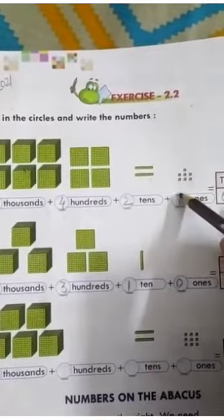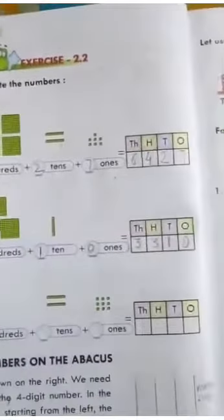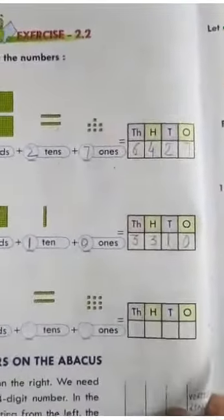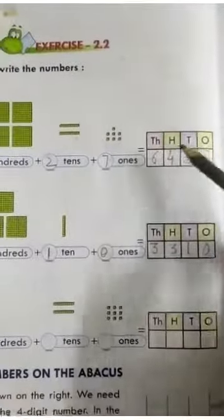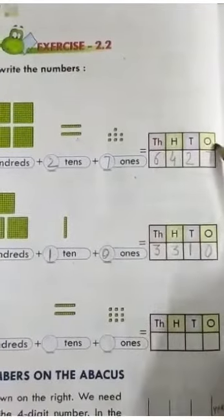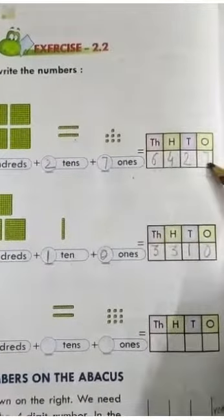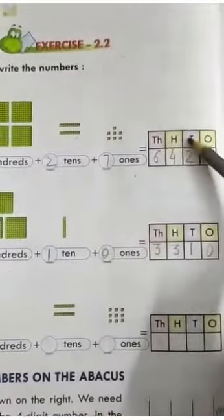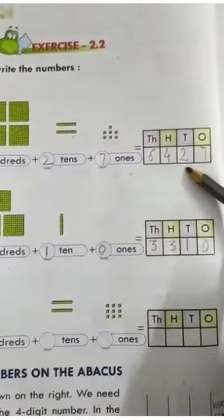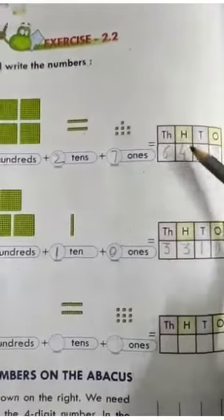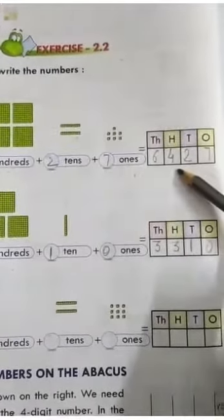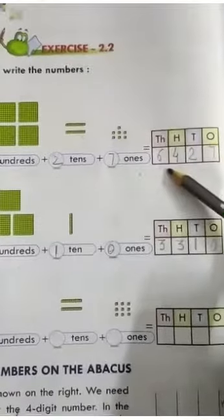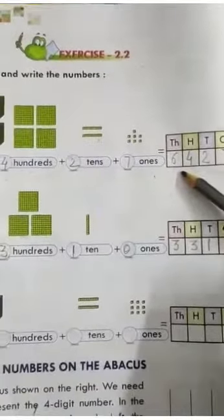So with 1s you will write 7. To write the 4-digit number: under 1s place value you will write 7, under 10s place value you will write 2, under 100 place value you will write 4, and under 1000 you will write 6.